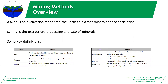Metallic ores include your ferrous metals, base metals, precious metals and radioactive minerals — such as copper, gold, iron ore, platinum, rare earth elements, etc. Non-metallic minerals, also called industrial minerals: potash, halite, gravel, sand, limestone, dimension stone. And then fossil fuels, which many of us have had exposure to in the form of coal. Other fossil fuels would be natural gas and tar sands.